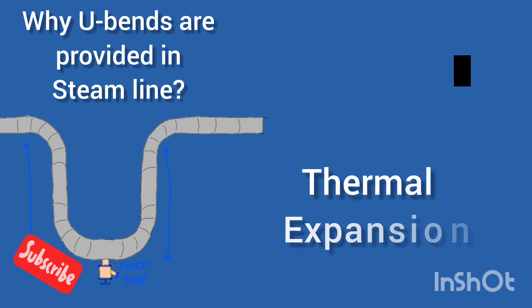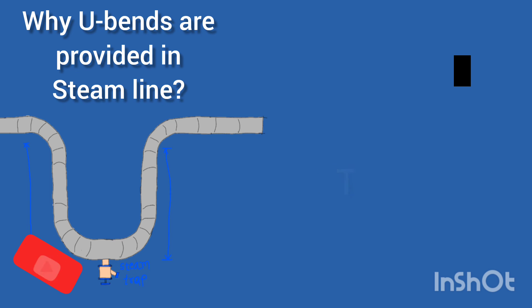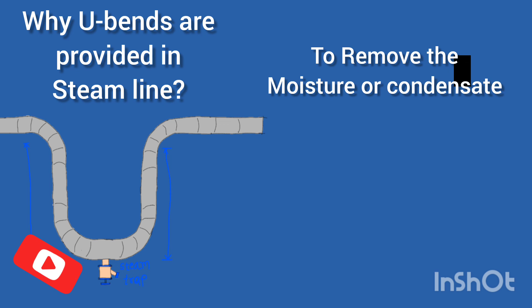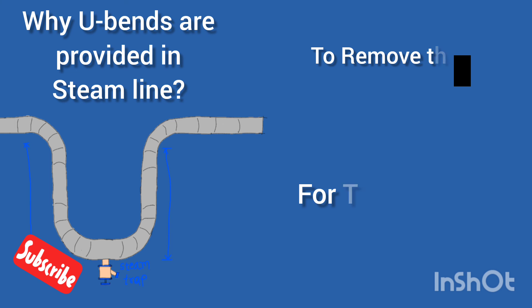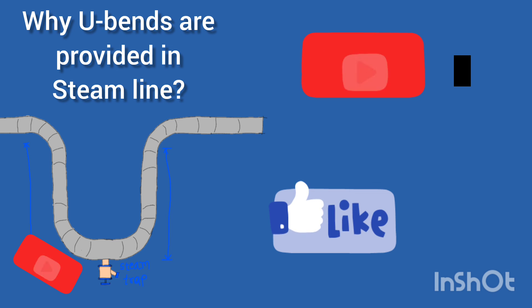There are two main reasons behind U-bends or expansion bends. First, to remove the condensate. Second, for thermal expansion and stress reduction. I hope you like this video, please subscribe.